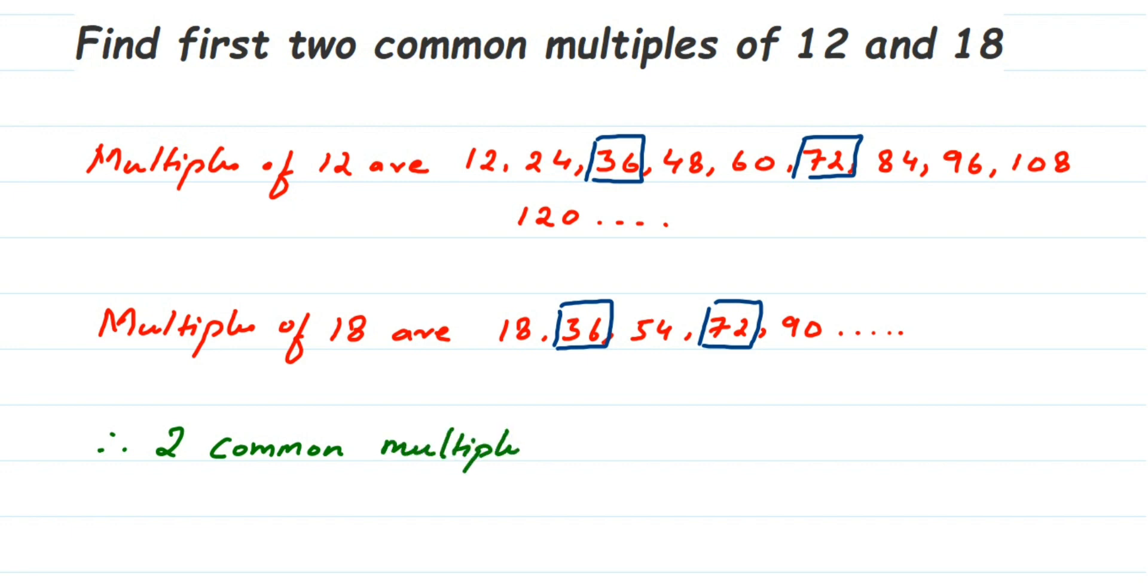Therefore, two common multiples of 12 and 18 are 36 and 72. That's it. I hope this question is clear. In case you have any other questions or doubts, you can drop a comment. Thank you so much for watching.